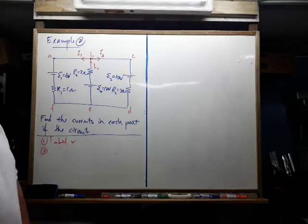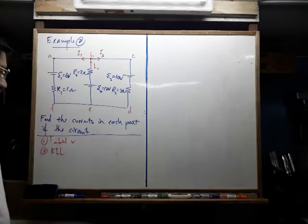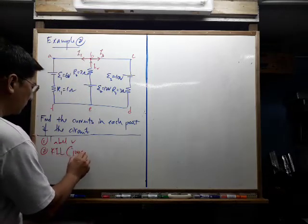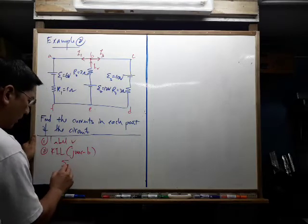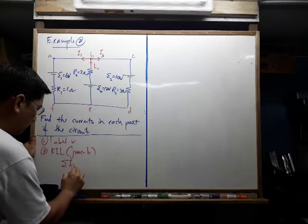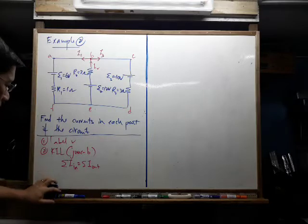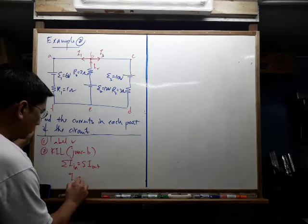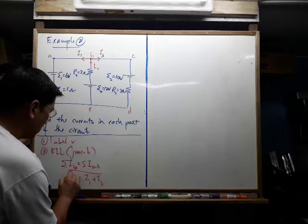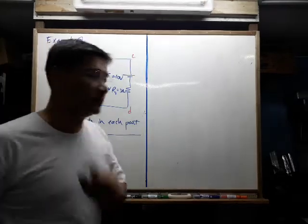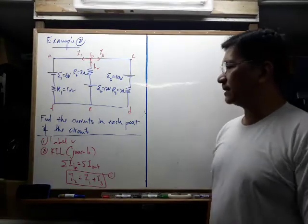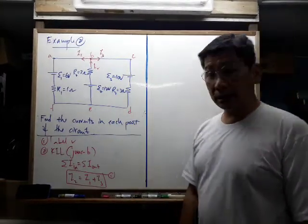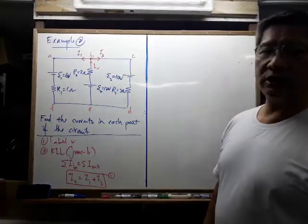Step two: use Kirchhoff's first law. We have two junctions, with currents labeled at junction B. Kirchhoff's first law says total current in must equal total current out. I2 is coming in, and I1 and I3 are going out, so: I2 = I1 + I3. That is our first equation. You cannot use Kirchhoff's first law a second time — at the second junction you get back the same equation, because all currents flow in opposite directions there.